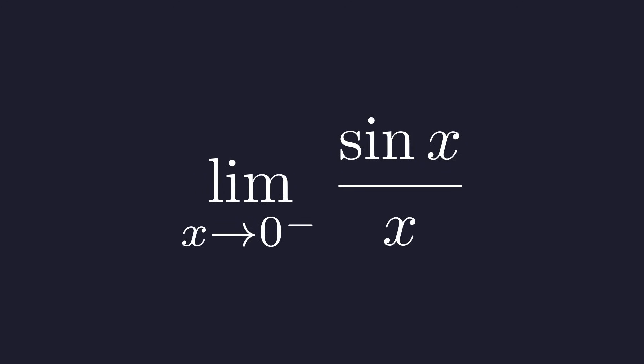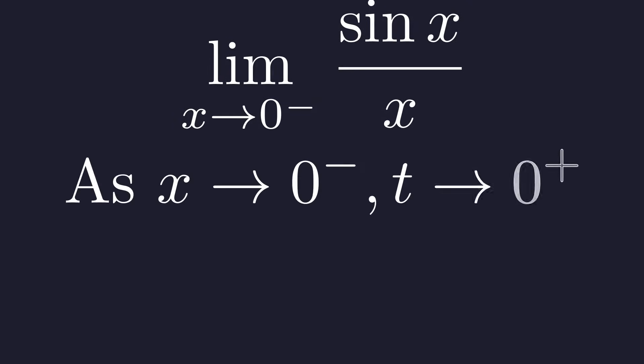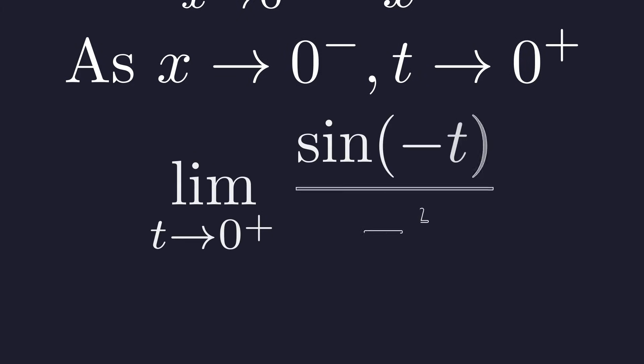A full proof requires us to show that the limit from the left is also one. We can't use the same geometric picture, so we must use algebra. To evaluate the limit as x approaches zero from the negative side, let's make a substitution: let t equal negative x. As x approaches zero from the left, our new variable t will approach zero from the right. Substituting t into our limit gives us the limit of sine of negative t over negative t as t approaches zero from the right.